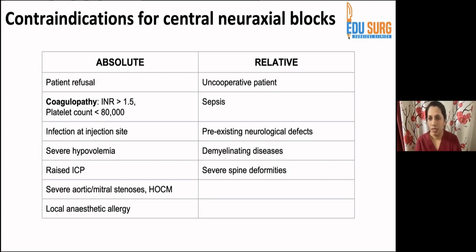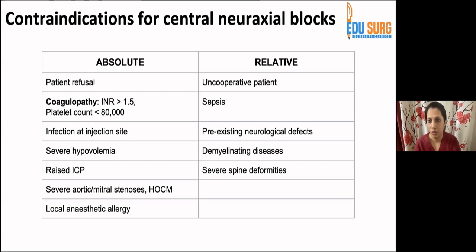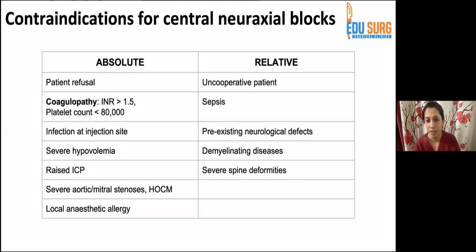Pre-existing neurological defects are a relative contraindication — assess the risk-benefit ratio. If general anesthesia is very risky, involve a neurologist, document the pre-existing defect, and confirm the injection will not exacerbate it. Demyelinating diseases are similarly relative if not in the active phase. Severe spinal deformities like kyphoscoliosis or ankylosing spondylitis are technically difficult but feasible with expertise — hence relative contraindications.